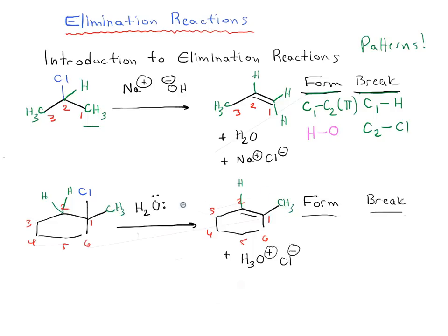Carbon 1, the CH3 hasn't changed. But let's look at carbon 1. What's different about carbon 1, comparing a molecule on the left and a molecule on the right? We clearly broke carbon 1 to chlorine and we clearly formed a bond between carbon 1 and carbon 2. So there's a pi bond here. And what about carbon 2? We have two hydrogens on carbon 2 and now we have one. So we clearly broke carbon 2 to hydrogen.